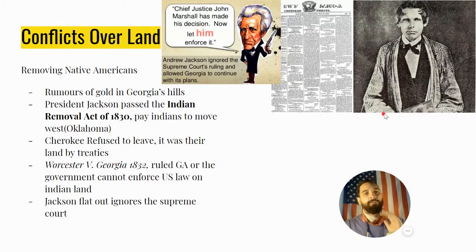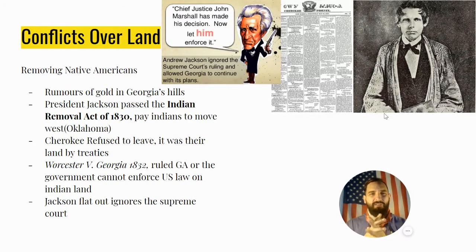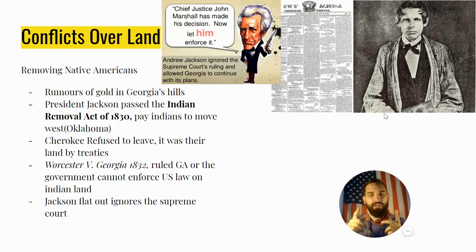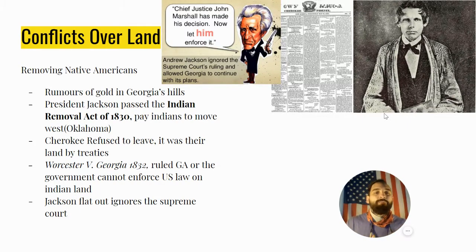There were rumors of gold in the Georgian hills, and settlers also wanted good farmland. Oklahoma, compared to where these Indians were living, had worse hunting, worse farmland, and a terrible climate — it was a wasteland, not their home. But they'd pay Indians to move west to the Indian Territory in Oklahoma. The Cherokees refused. There were about 17,000 Cherokees living there at the time. Georgia was enforcing federal law on Cherokee land — but remember, this was essentially a separate country at the time. American laws did not apply to this region.